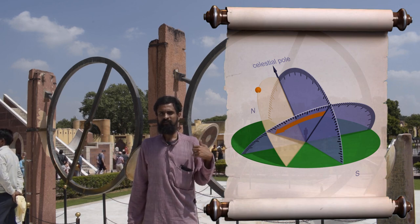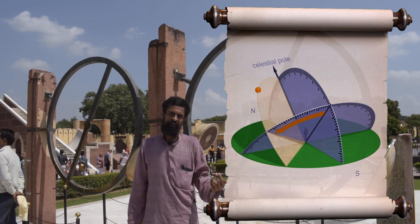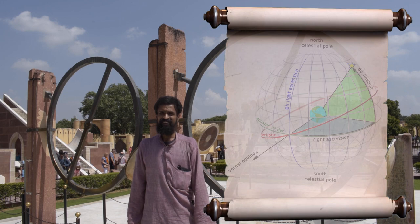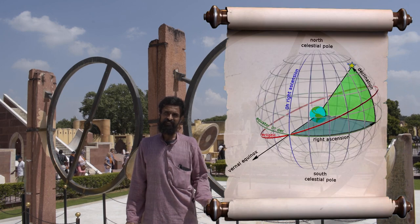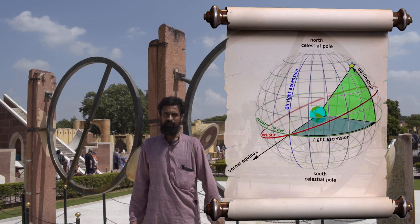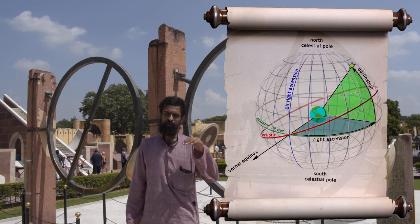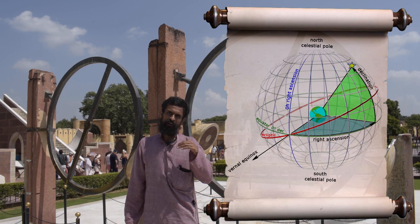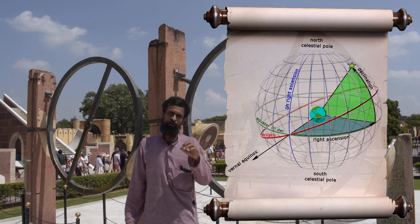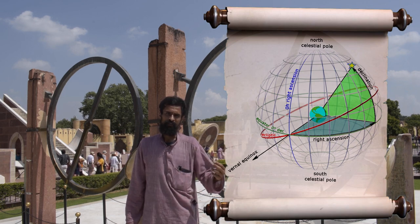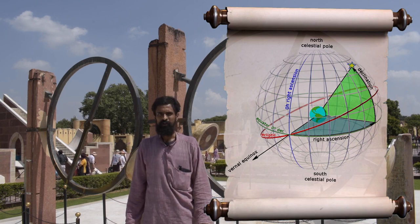And what is declination? Declination is nothing but the angular distance of any celestial object with regard to the north celestial pole — or the south celestial pole, for that matter.